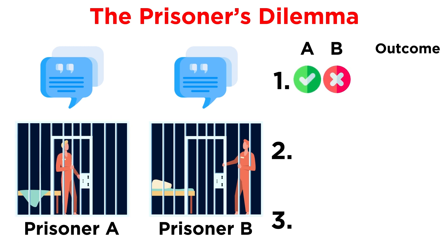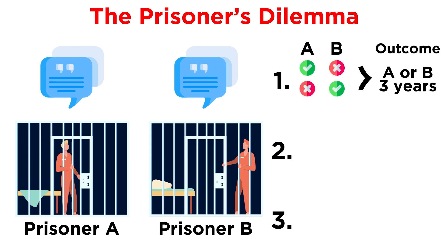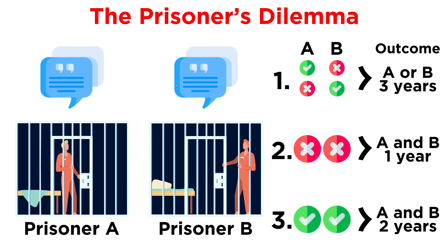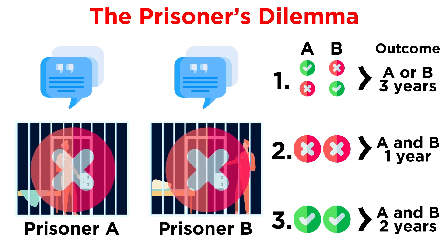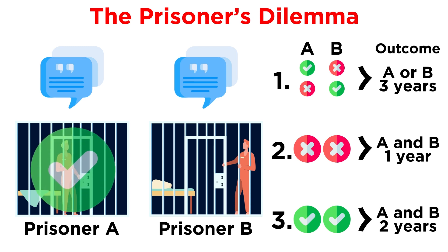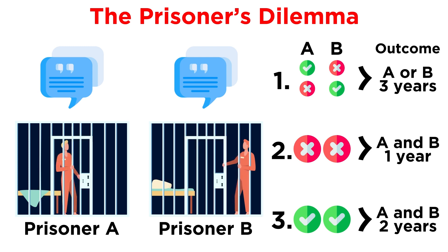If only prisoner A confesses, they are set free, but prisoner B will serve a three-year prison sentence, and vice versa. If neither prisoner A nor prisoner B confesses, both will serve a one-year sentence. If both prisoner A and prisoner B confess to the crime, they will both serve a two-year prison sentence. So what should prisoner A do? If they don't confess, they hope that prisoner B will also refuse to confess, so that they both only stay a year in prison. But prisoner A could try to betray prisoner B by confessing, as long as they think that prisoner B won't confess. Then prisoner A wouldn't have to serve any time in prison, while prisoner B would be stuck there for three years.